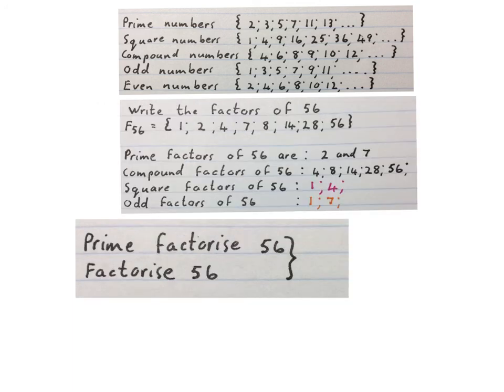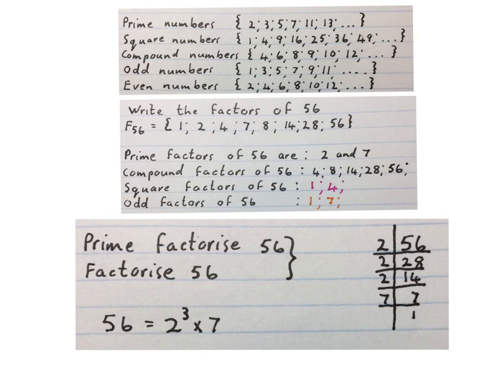Another question they might ask you is to prime factorize 56 or just say factorize 56. Then you'll write 56 equals 2 to the power of 3 times 7. Please look at the video that explains prime factorize.